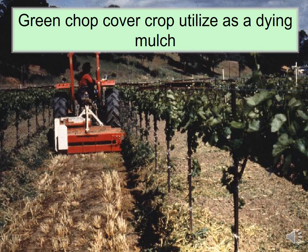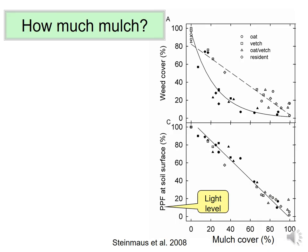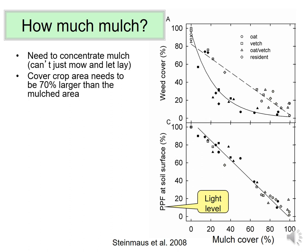Mulch in the vine row is very effective at suppressing weeds by blocking light and preventing weed seedlings from emerging. For adequate weed suppression, you need to concentrate the mulch — you can't just let a cover crop lay where it grew. You need roughly a 3-to-1 ratio: about 70% of the area growing cover crops, with that mulch concentrated down to 30% of the area, to create a thick enough mulch layer.